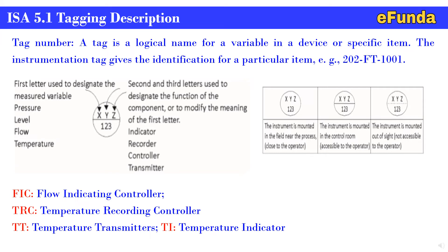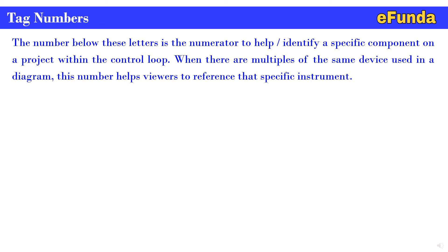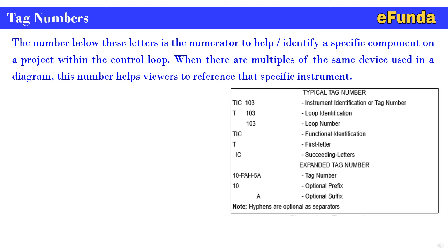This is how the tagging convention is assigned in the instrument industry, and for that ISA 5.1 tagging description is mainly used by all the clients. Tag number - the number below the letters is a numerator to help identify a specific component on a project within a control loop. When there are multiple of the same device used in a diagram, this number helps the viewer to reference that specific instrument. One can see the typical tag number indicated on the right hand side where TIC-103 is the instrument identification or tag number. T-103 is the loop identification, T-103 is the loop number. This is how the nomenclature is being used for the tag number.